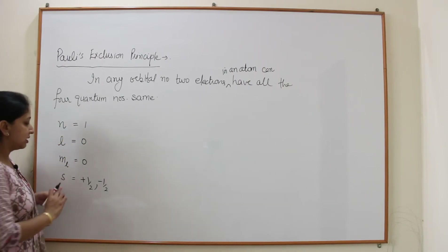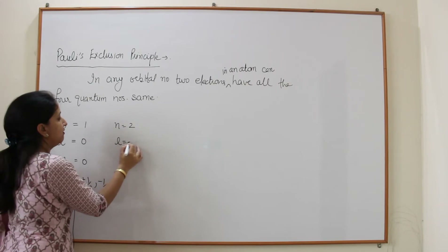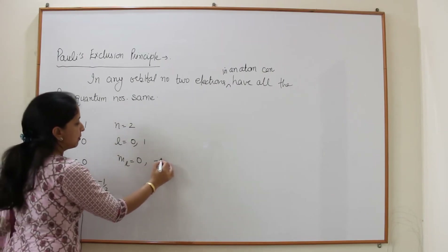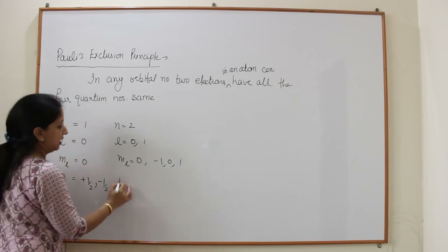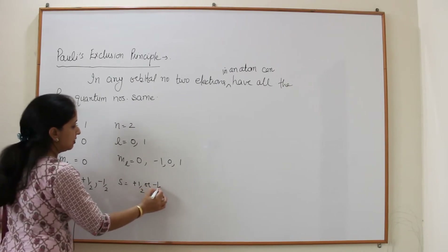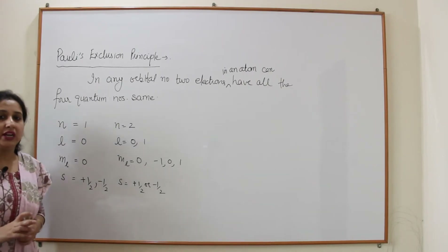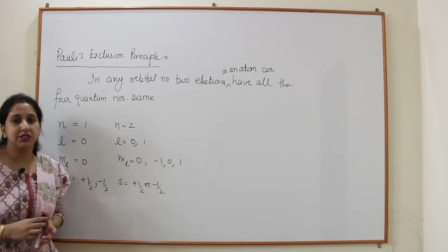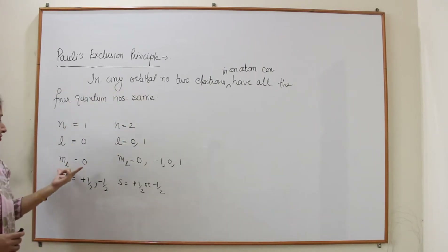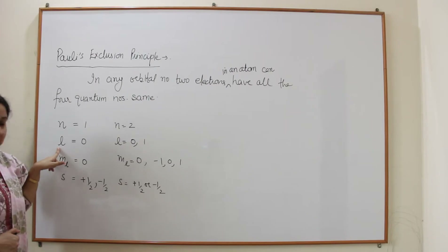If N=1, then L can only be 0, ML is also 0, and S will be either +½ or −½. For N=2, L can be 0 or 1; accordingly ML will be −1, 0, or +1, and spin quantum number S will be either +½ or −½. This makes clear that the four quantum numbers are never all the same. ML tells us the orbital.